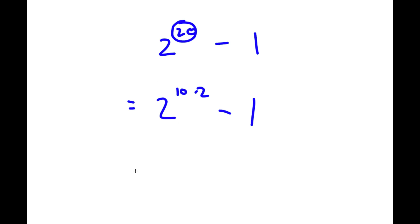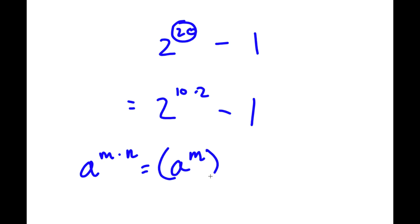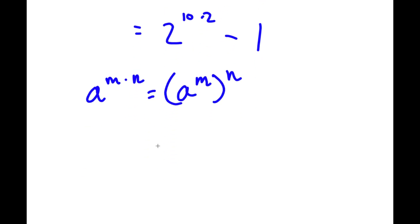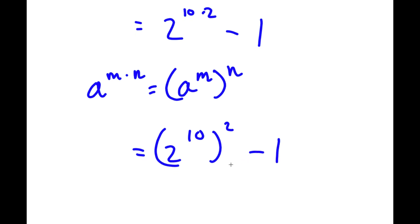Now, if I have something in the form a to the power of m times n, this is the same thing as a to the power of m to the power of n. So, 2 to the power of 10 times 2, I can rewrite as 2 to the power of 10 to the power of 2. Now, I have this minus 1.